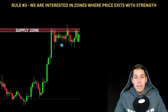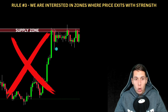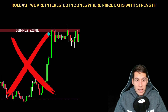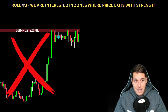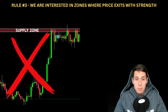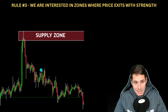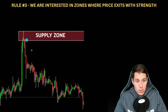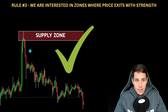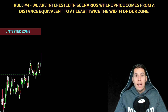Rule number three: we are interested in zones where price exits with strength. Let me give you an example of what we don't want. Here we identify a supply zone, and look at the exit — we got a little bit of a rejection but nothing significant; price just continued sideways. We don't want this. What we want is something like this, where price exits with strength — you can see this strong move. That's what we are interested in.